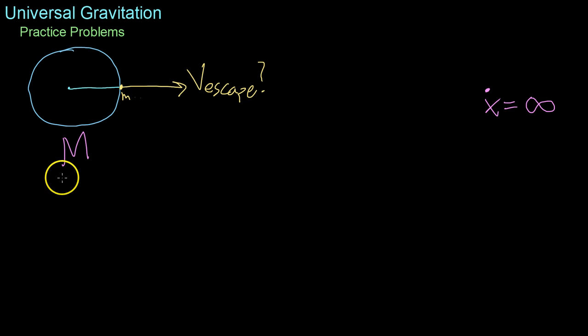All right, so moving on now, we're going to be using the concept of gravitational potential energy, specifically looking at the calculation of escape velocity. Now, escape velocity, or v escape, as we'll abbreviate it, is the velocity necessary to leave a gravitational field completely.